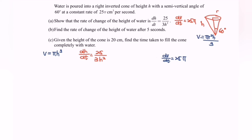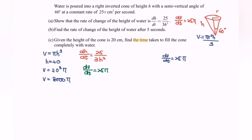Part C: Given the height of the cone is 20 cm, meaning h equals 20. So V equals (20)³ × π, which gives V equals 8,000π cm³. Find the time taken to fill up the cone completely with water. We are looking for the time. Since dV/dt equals 25π, meaning 1 second fills 25π cm³, we need the time to fill volume 8,000π.